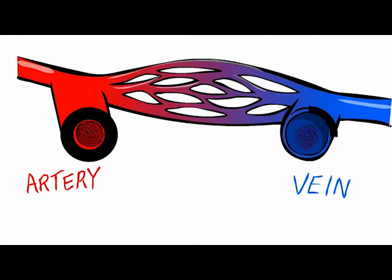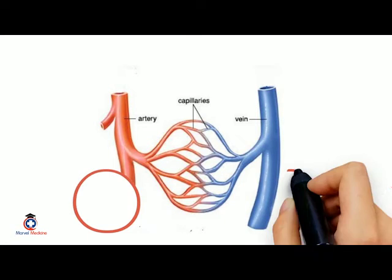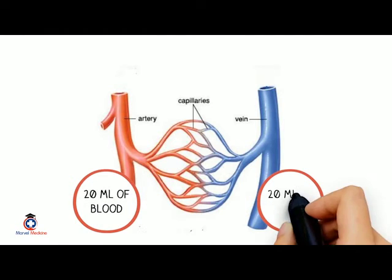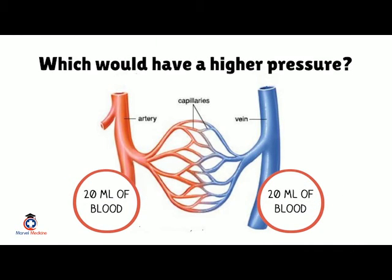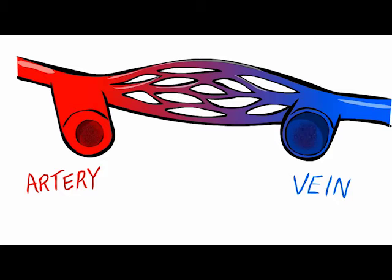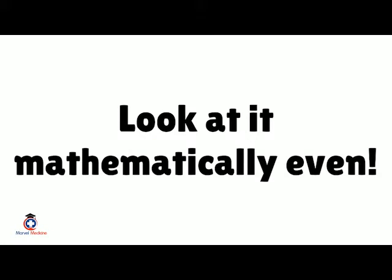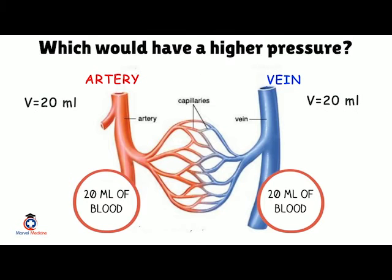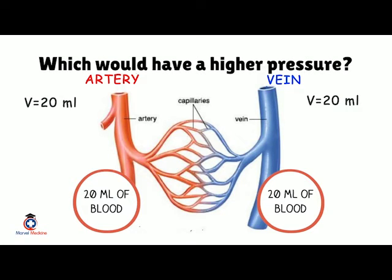Take two blood vessels — an artery (red) and a vein (blue) — and put 20 milliliters of blood in each. Which has higher pressure? The artery, because it is less compliant due to its thicker, more rubbery texture. Mathematically, the volume change is the same (20 mL), but the pressure change is much higher in the artery, meaning it is less compliant.